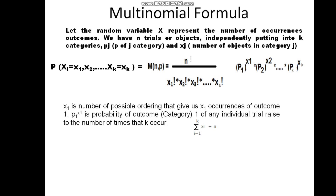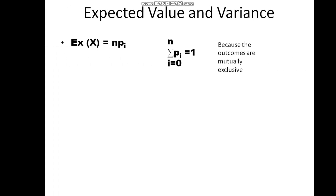The sum of Xi from i equal 1 to K equals N, which is the total number of outcomes. The expected value of the multinomial distribution equals N times Pi, where N is the total number of trials and Pi is the probability of category i. The variance of Xi for the multinomial distribution equals N times Pi times Qi, where Pi is the probability of category i and Qi is 1 minus Pi.